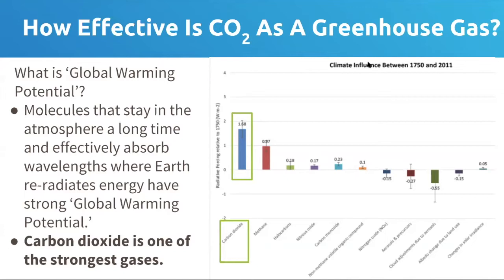Even though on a per-molecule basis, methane might be more significant at absorbing heat energy, it cycles much more rapidly through the atmosphere, so it doesn't have as large an effect as carbon dioxide.